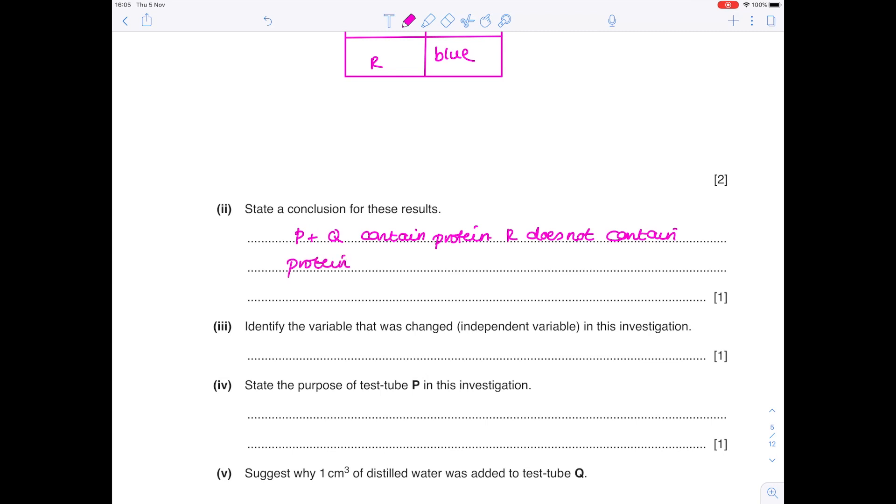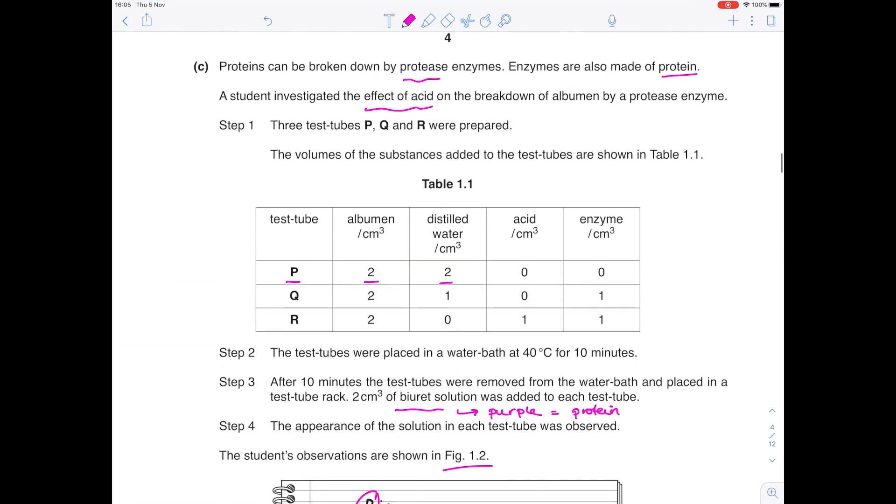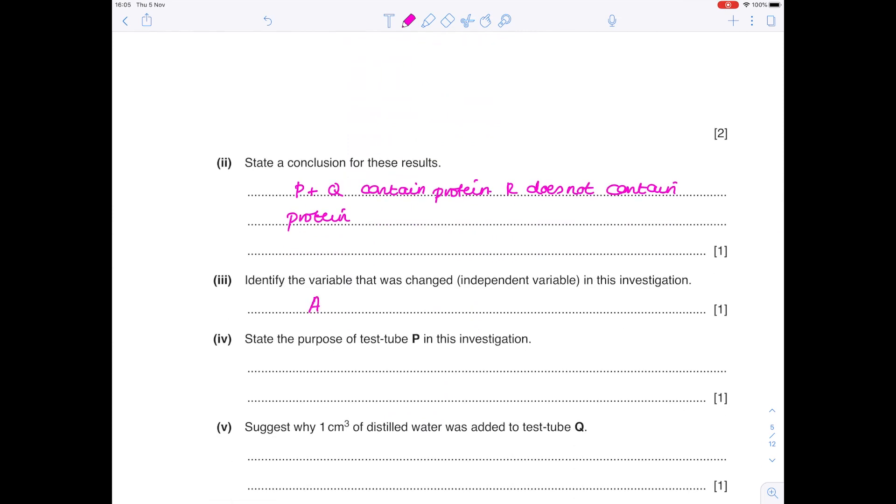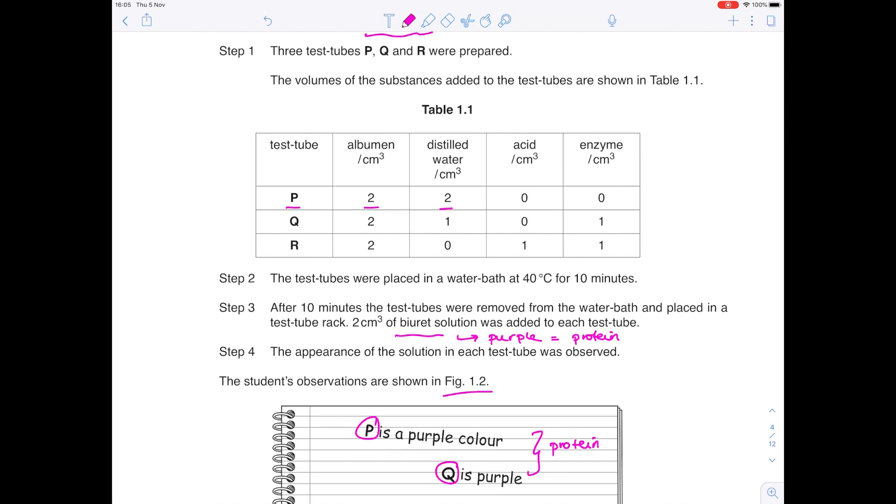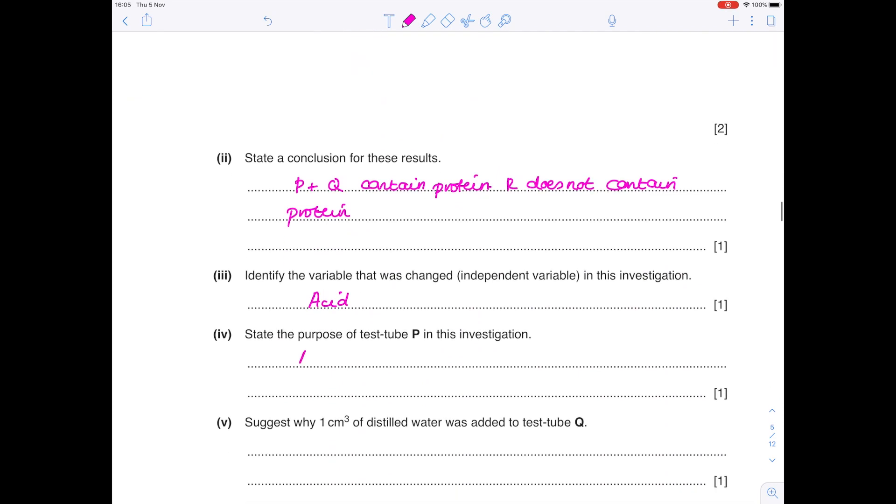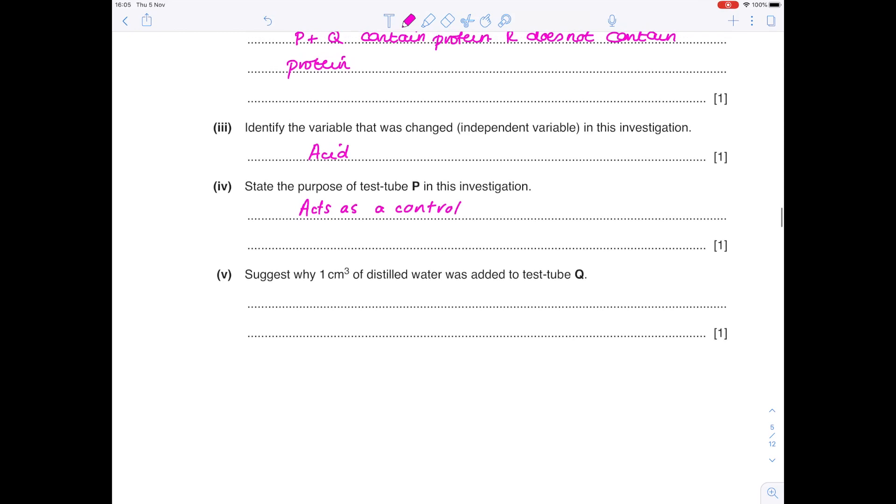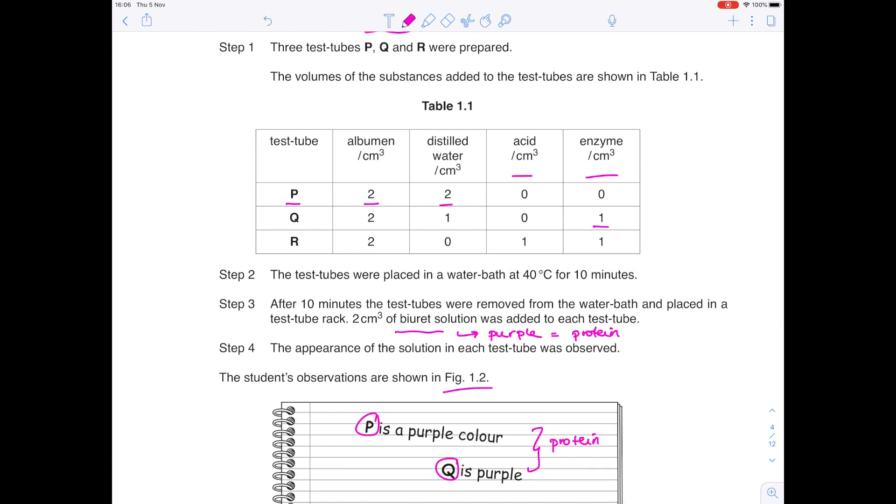Identify the variable that was changed, the independent variable in this investigation. I've already underlined it at the top. A student investigated the effect of acid. So our variable here is acid. State the purpose of test tube P in this investigation. If we look at P, it doesn't contain either acid or enzyme. So we know that it's simply acting as a control. Suggest why one centimetre cubed of distilled water was added to test tube Q. If we look at the various volumes added, we can see that there's four in P, four centimetres cubed in Q and four in R. So it's effectively to make up the volume and make sure that it's four for each.